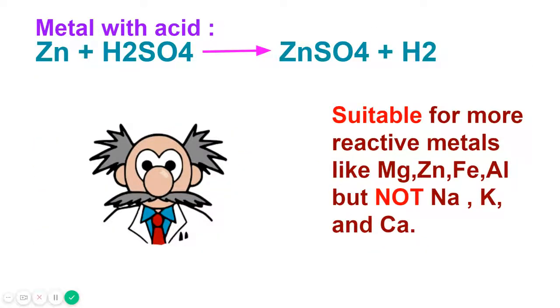Now let's see the reaction of metal with acid. You can see that zinc is reacting with sulfuric acid and forming zinc sulfate and hydrogen gas is produced.